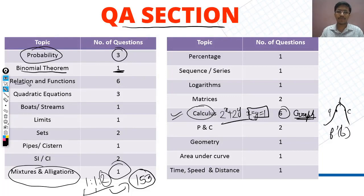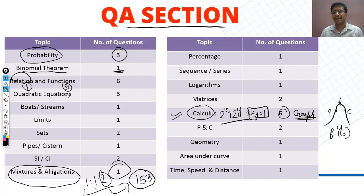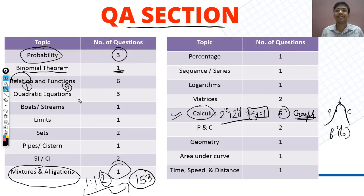In relations and functions, there was 1 relation question and 5 function questions. The relation question was easy — you had to find the age difference between two people in a city, with a maximum difference of 5 years. The answer involved checking whether the relation was transitive, reflexive, or symmetric — it was reflexive and symmetric but not transitive.